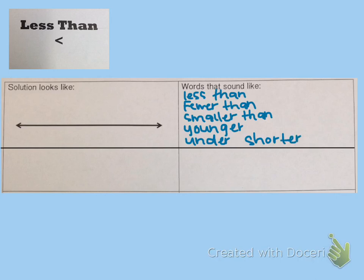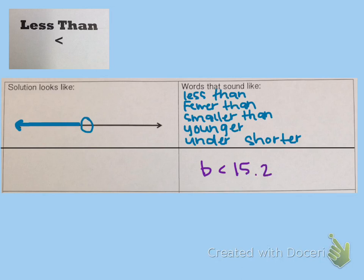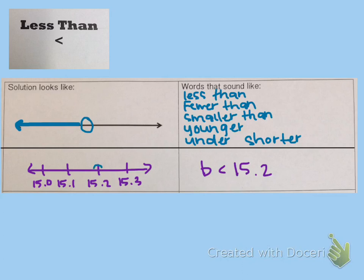Those are just a few examples. When you graph a less than inequality on the number line, you'll find your number and put an open dot around it. Then instead of drawing the arrow to the right, you're going to draw the arrow to the left of the open dot. We have b is less than 15.2. Find 15.2 on the number line, draw an open circle around it, and draw the arrow to the left. That is how we graph a less than inequality.